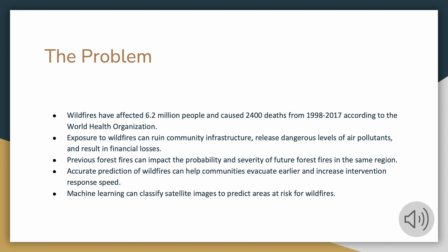Previous forest fires can impact the probability and severity of future forest fires in the same region as studies have shown. An accurate prediction of wildfires can help communities evacuate earlier and increase intervention response speed. This would prevent large wildfires from spreading even further and impacting more communities. Machine learning can help classify satellite images to predict areas that are at risk for wildfires.